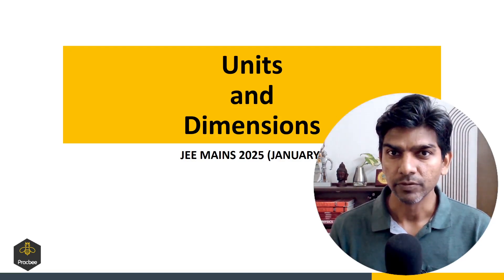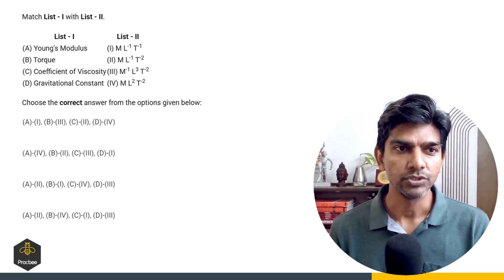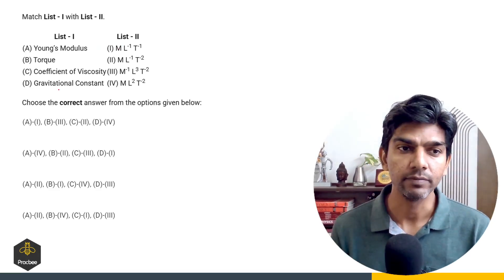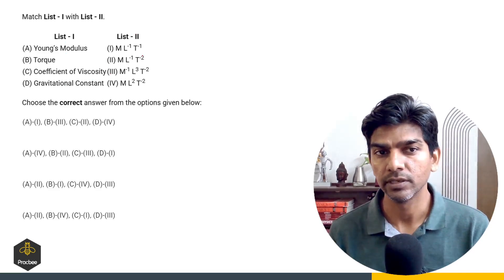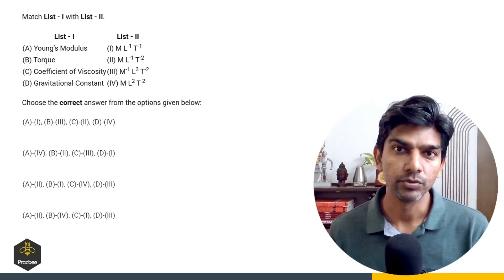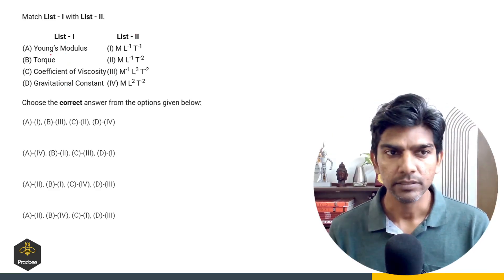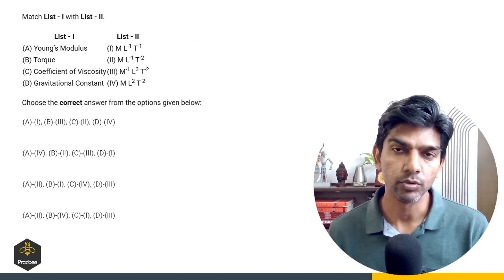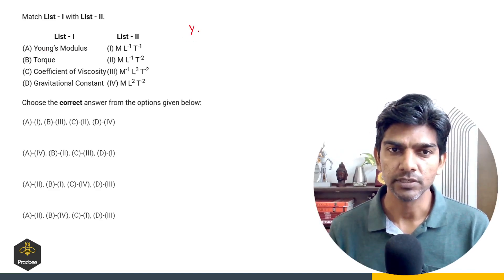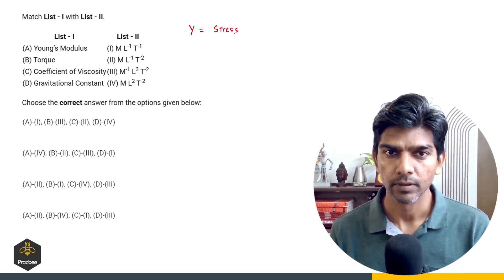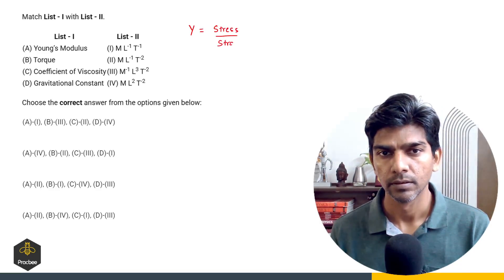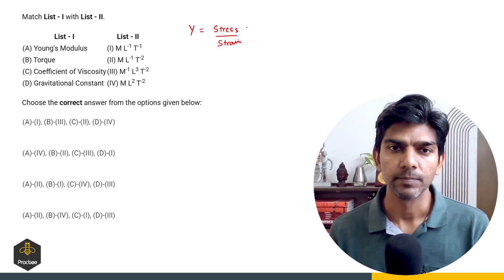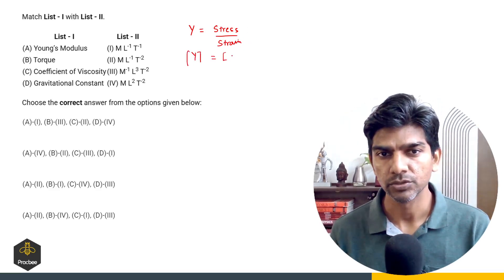Let us jump to the different questions. The first question is match the column. We have list 1 and list 2. On list 1 we have different physical quantities and on list 2 we have dimensions of those physical quantities. We have Young's modulus first. We have to think about the formula which has Young's modulus in it. Young's modulus is stress upon strain, and strain is dimensionless.